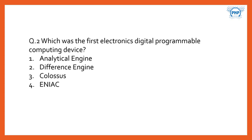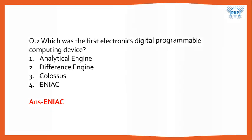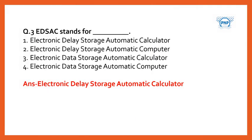Which was the first electronic digital programmable computing device? The answer is ENIAC. Next, EDSAC stands for what? It stands for Electronic Delay Storage Automatic Calculator.